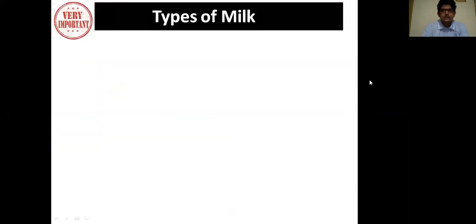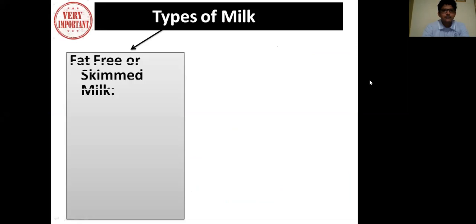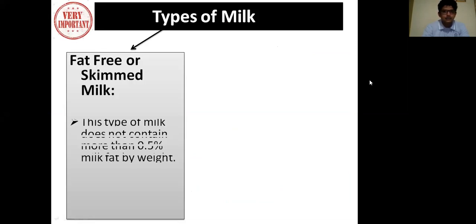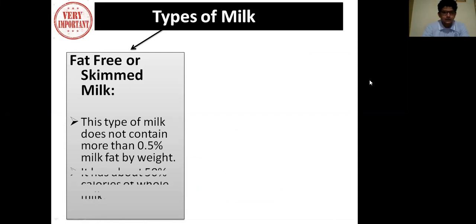Here are the types of milk. The first type is Fat-Free or Skim Milk. This type of milk does not contain more than 0.5% milk fat by weight. It has about 50% of the calories of whole milk.